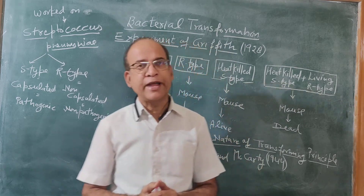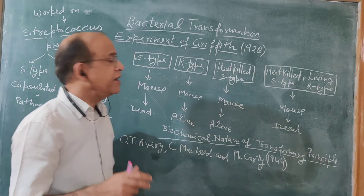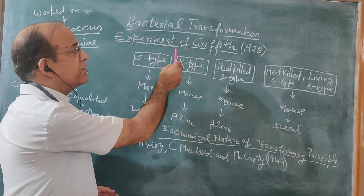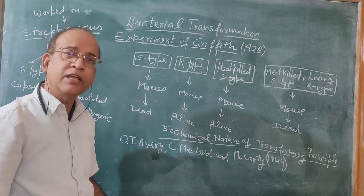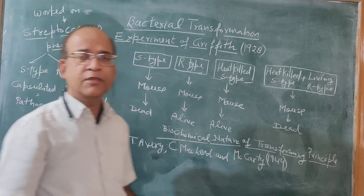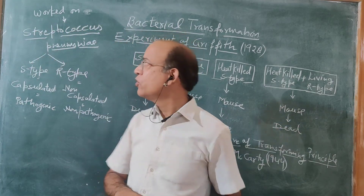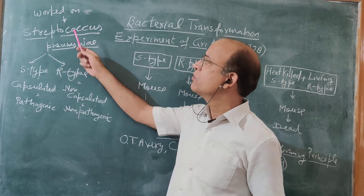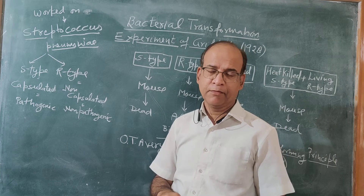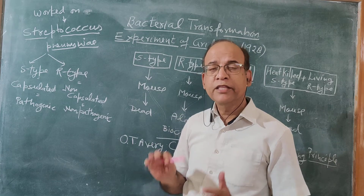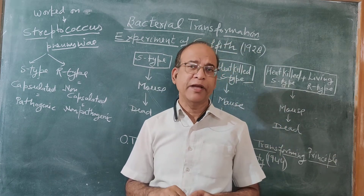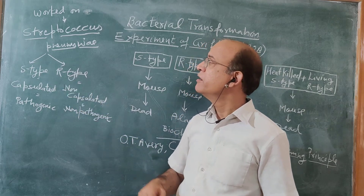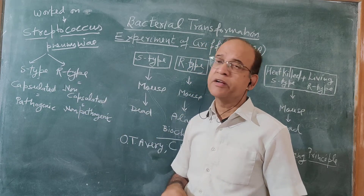This process of bacterial transformation was proved by scientist S.F. Griffith by his experiment. Griffith worked on a bacteria, and that bacteria was Streptococcus pneumoniae. There are two strains of this bacteria.